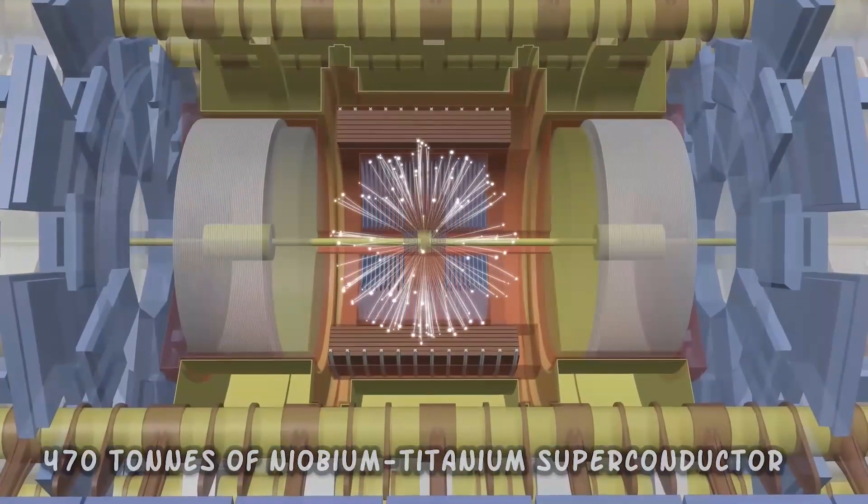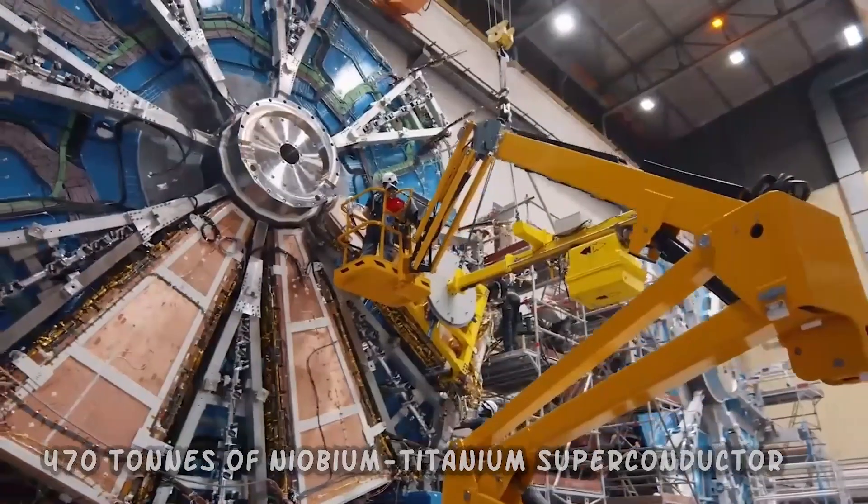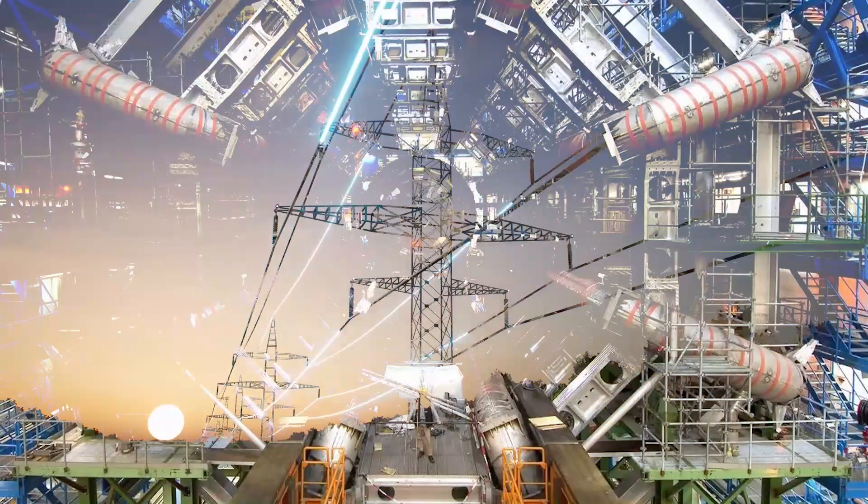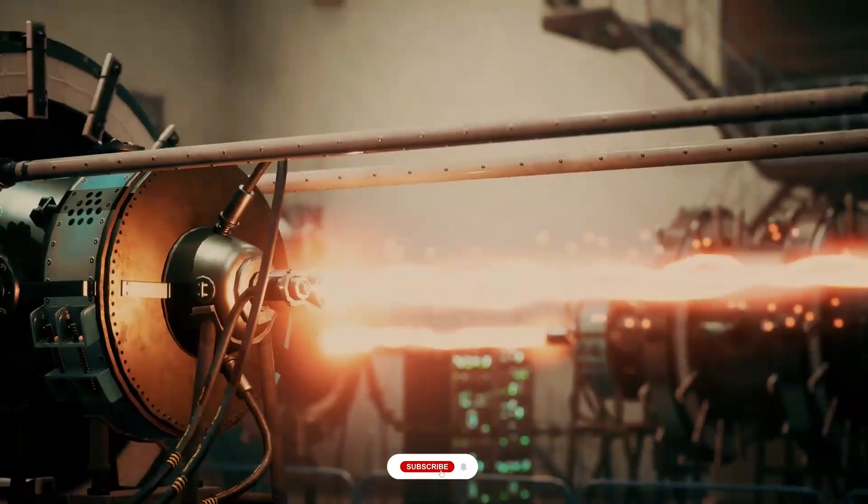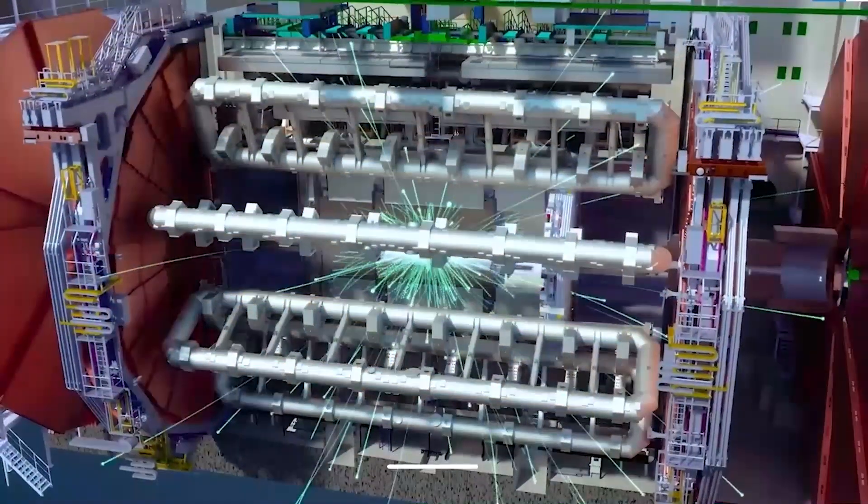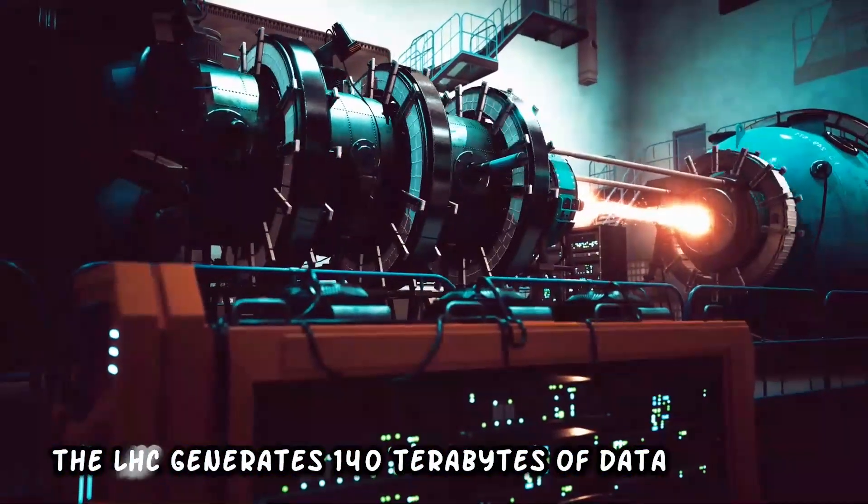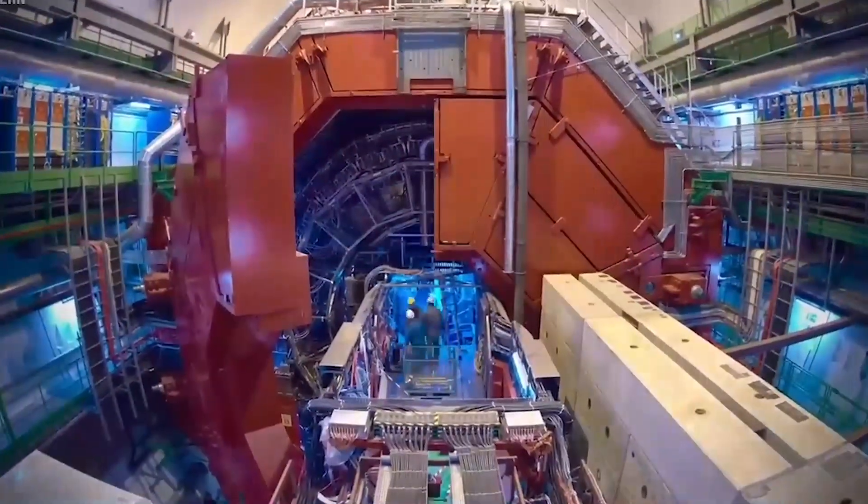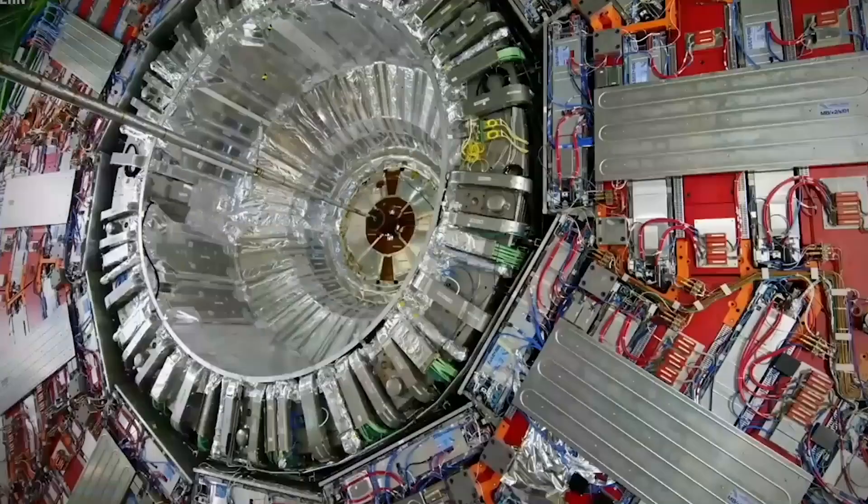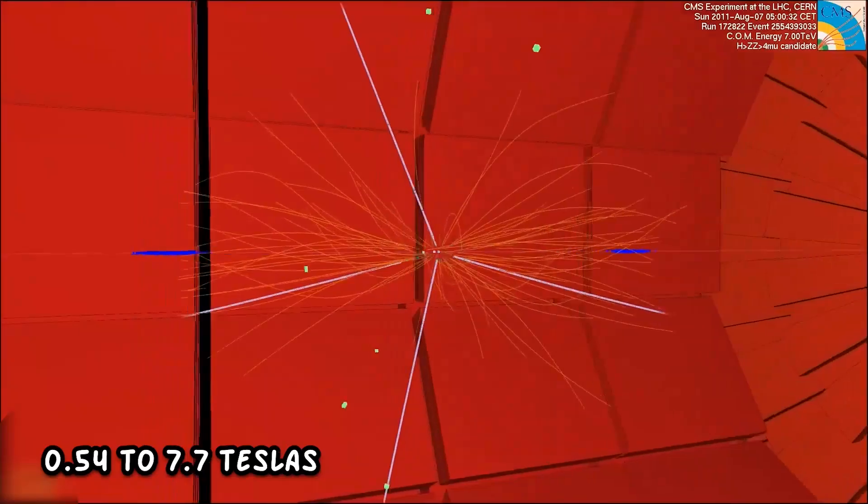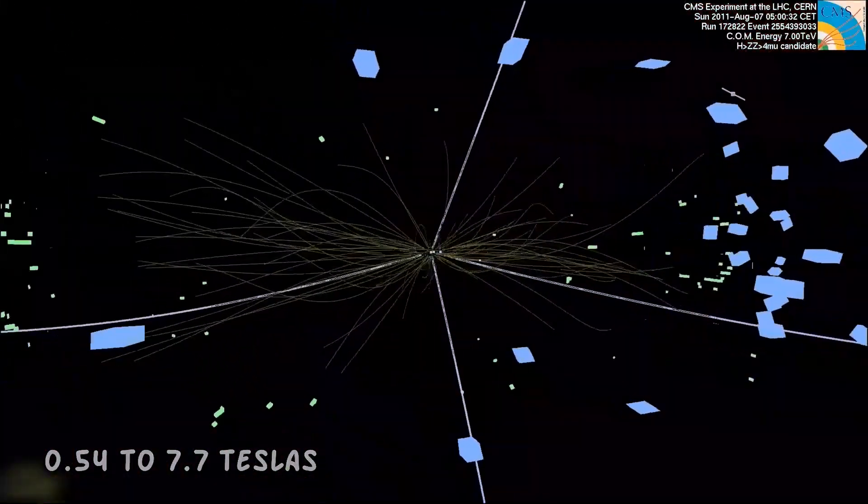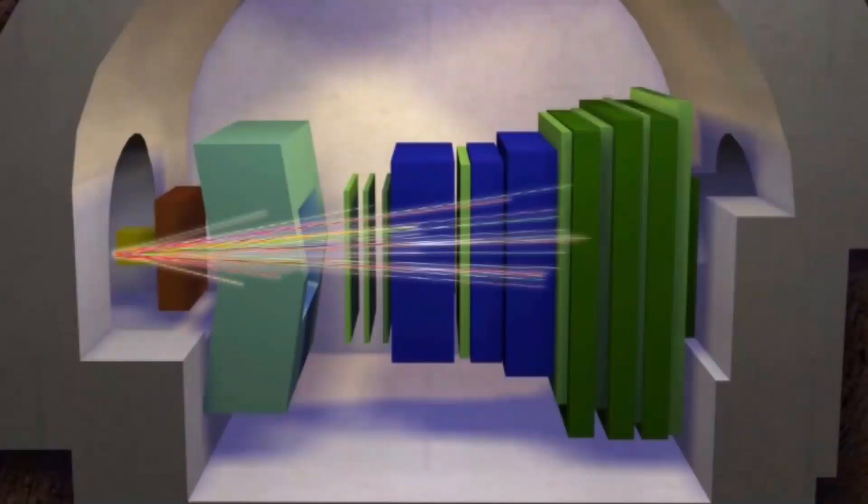The LHC uses 470 tons of niobium-titanium superconductor. The LHC draws 200 megawatts of electrical power from the French electrical grid during operations, while the accelerator and detectors draw 120 megawatts. Each day, the LHC generates 140 terabytes of data. When running at an energy of 6.5 tera electron volts per proton, the field of the superconducting dipole magnets increases from 0.54 to 7.7 teslas. The protons are bunched together into up to 2,808 bunches, allowing interactions between the two beams to occur at discrete intervals.